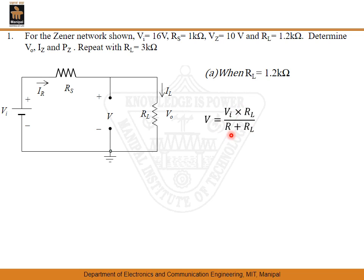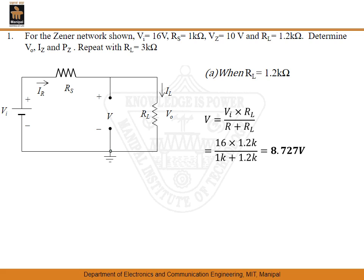We find the voltage across the Zener diode. If this voltage is greater than VZ, then the Zener diode will be in the ON state and will act like a supply having voltage VZ. If this voltage is less than the Zener voltage, the Zener diode will be in the OFF state. Substituting the values of VI, R, and RL, we calculate V at RL equal to 1.2 kilo ohm as 8.727 volts.